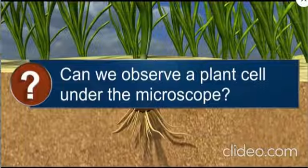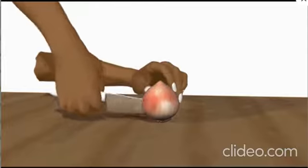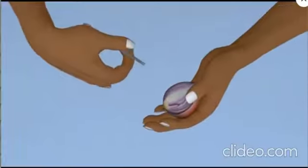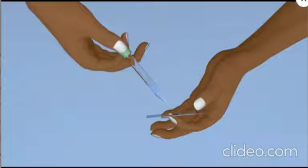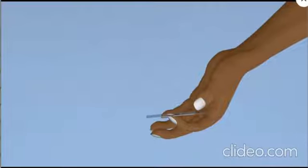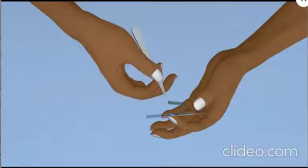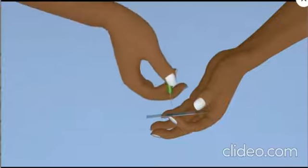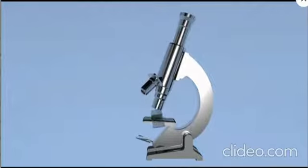Can we observe a plant cell under the microscope? To do so, take an onion bulb and remove a thin peel from it. Spread the peel on a glass slide and put a drop of water on it — water will prevent the peel from drying. Then add a drop of methylene blue solution to the peel. Place a cover slip on it and tap gently to prevent the formation of air bubbles. Place the slide under the microscope.